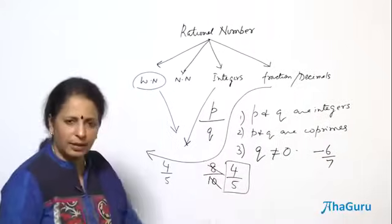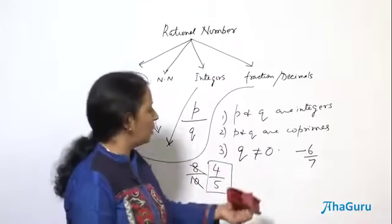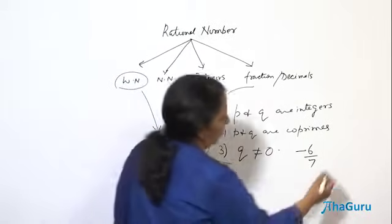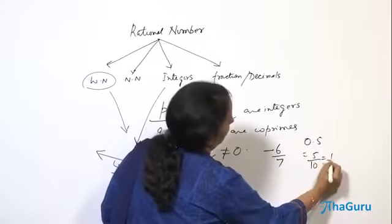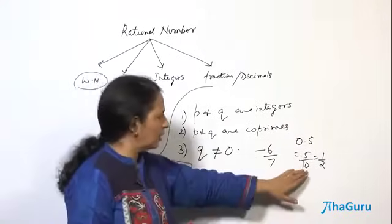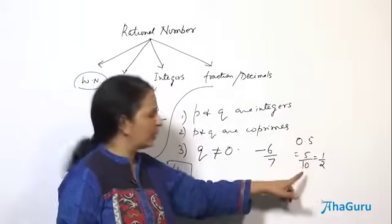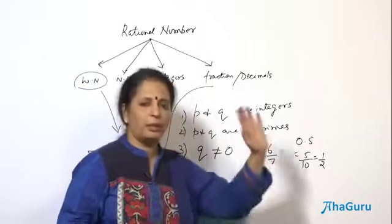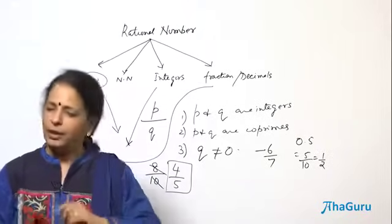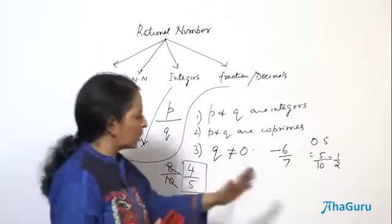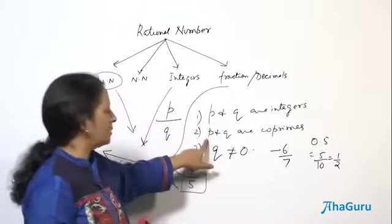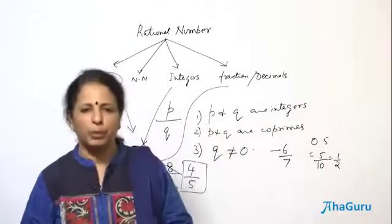Even a negative fraction like minus 6 by 7 is a rational number — minus 6 is an integer, 7 is an integer, denominator is not zero, and they are co-prime. What about decimals? 0.5 is nothing but 5 by 10, which reduces to 1 by 2. 5 by 10 alone is not rational because 5 and 10 are not co-prime — both divisible by 2. So we reduce to 1 by 2 and call it a rational number. Always reduce fractions to their lowest terms.